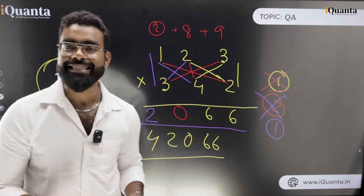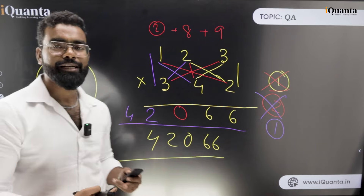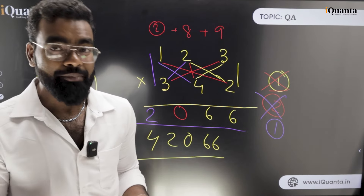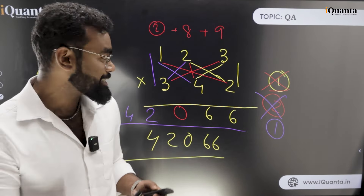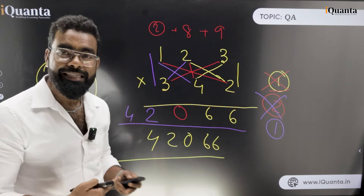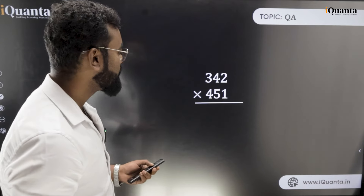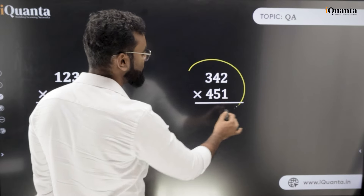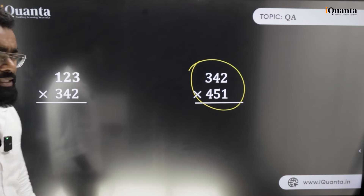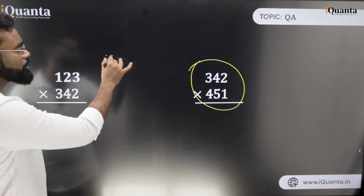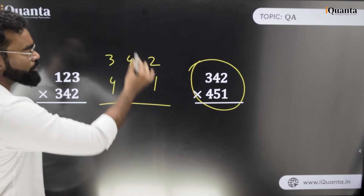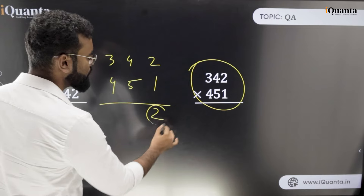That's how you can do a three-digit multiplication in a single run. If you do it on a regular basis you can do it faster — practice is the only thing that makes this happen. Please practice it. Now let's do another example: 342 into 451. First step is 1 into 2, which is 2.